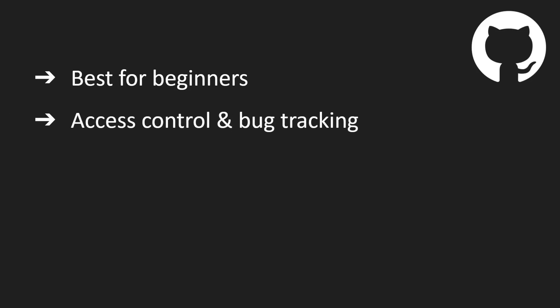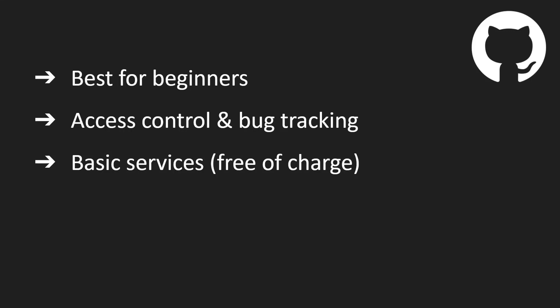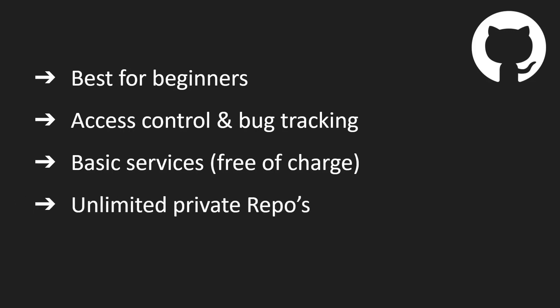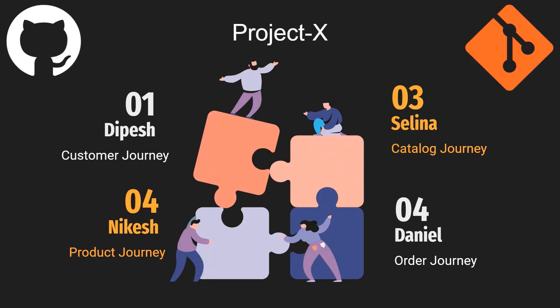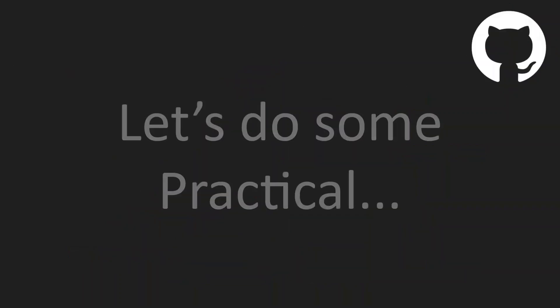If you are a beginner, GitHub is the best platform to host code repositories. It also provides great collaboration features like access control, bug tracking, and continuous integration. On top of all that, GitHub offers its basic services free of charge. You just need to create a GitHub account and you can create unlimited repositories with up to three collaborators per repository for free. This is how multiple people can work on different features of the same project at the same time using the combo of git and GitHub.